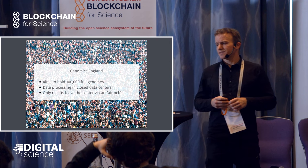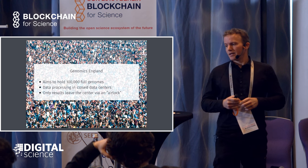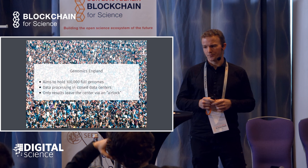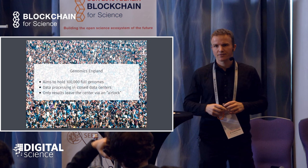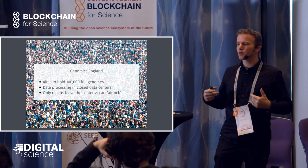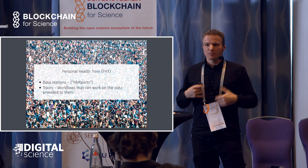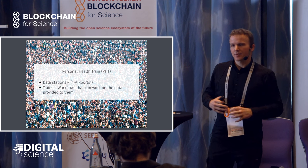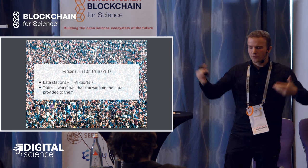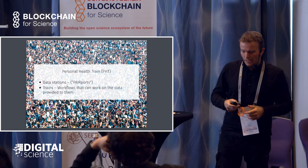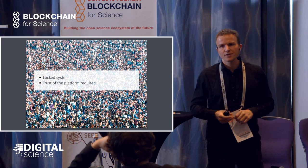How is this done currently? Just as an example: Genomics England is a state-held company that aims to have 100,000 full human genomes, which is huge. What they do currently is they have closed data centers where only certain people have access remotely, they can run their algorithms there, and only the results leave via an airlock. A similar approach is the so-called Personal Health Train — they have data stations, basic data centers where you can push in algorithms or programs, and you get some data out. Both of them are kind of locked systems and you need, as always, to trust these instances.